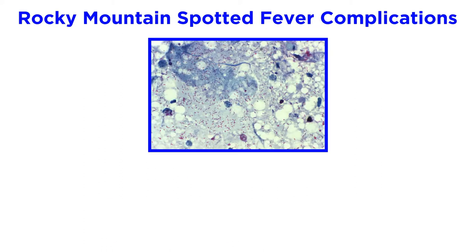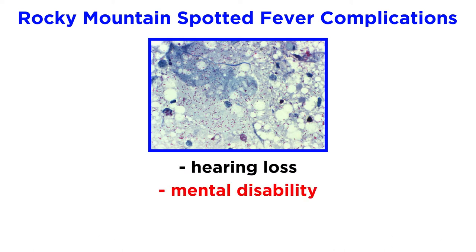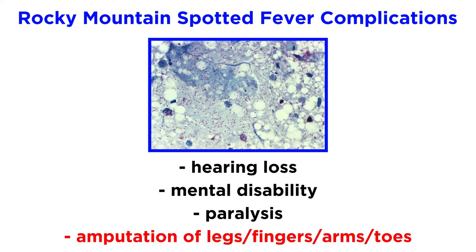If left untreated, Rocky Mountain spotted fever can cause complications, including hearing loss, mental disability, paralysis, and even the necessity for amputation of legs, fingers, arms, or toes.